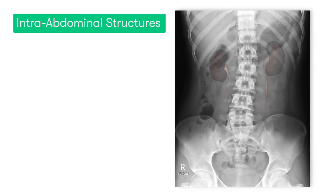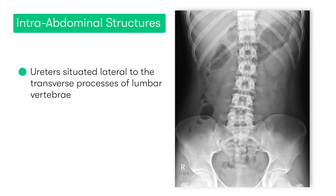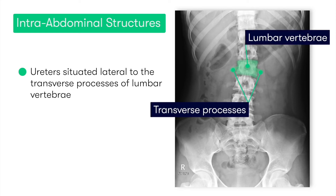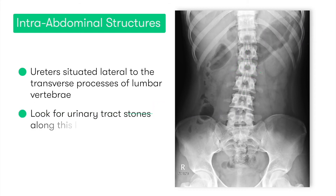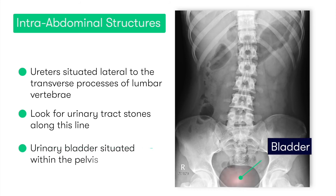Moving back to the kidneys, we have the ureters, which come off the renal pelvis on the medial aspect of the kidneys. The ureters run inferiorly down to the urinary bladder, along a course which roughly approximates with the lateral points of the transverse processes of the lumbar vertebrae. It's along the course of this line that we look for the presence of any radio-opaque urinary tract stones in patients who have acute abdominal pain. And finally, lying within the pelvis, we have the urinary bladder, which we can see here.